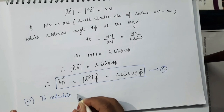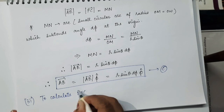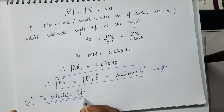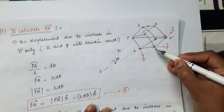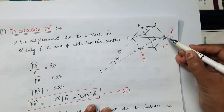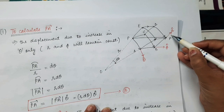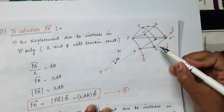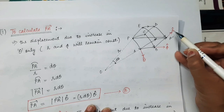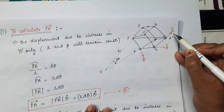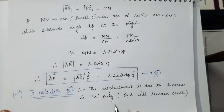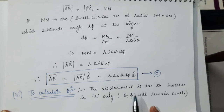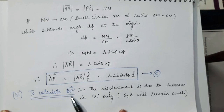To calculate the BP' vector, as you can clearly see, this BP' vector is in the direction of R cap. So in this BP' vector, only the R coordinate will change and theta and phi will remain constant. The displacement is due to increase in R only, so theta and phi remain constant.